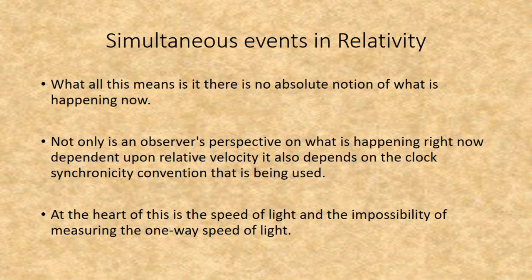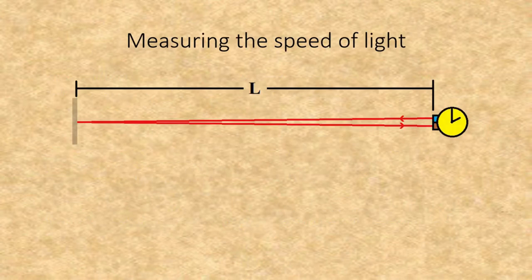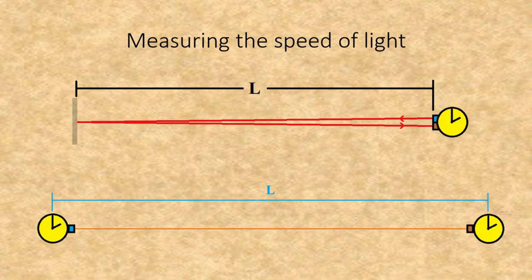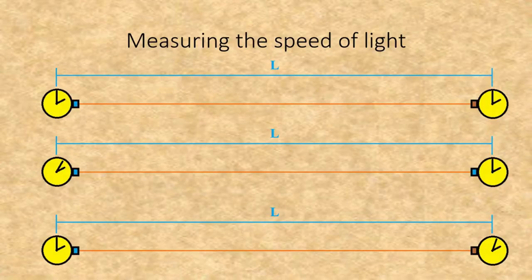What this means is that there is no absolute notion of what is happening 'now.' Not only is an observer's perspective on what is happening right now dependent upon relative velocity, it also depends on the clock synchrony convention being used. At the heart of this is the speed of light and the impossibility of measuring the one-way speed of light. The simplest way of measuring the speed of light is sending a pulse of light to a mirror and bouncing it back, using the same clock. To measure the one-way speed of light, you need to send a pulse from one clock to another with the two clocks synchronized. The problem is that if the clocks are not synchronized perfectly, you will get erroneous figures.